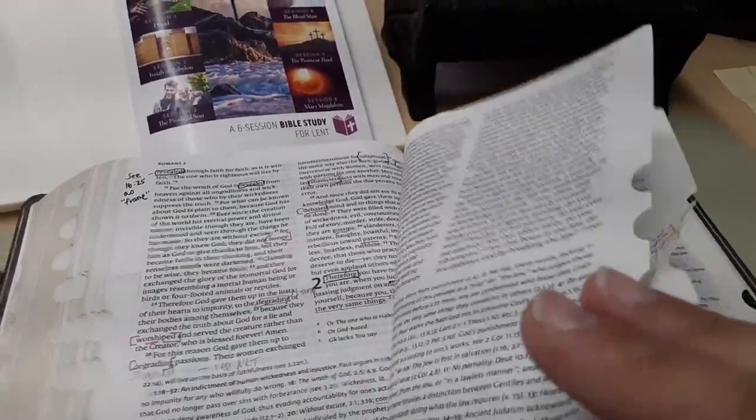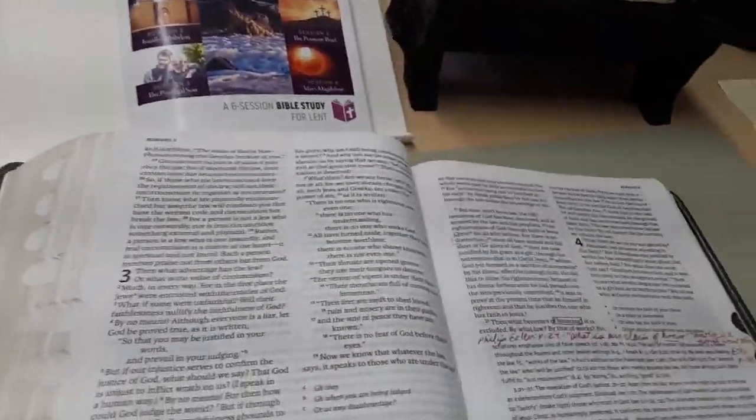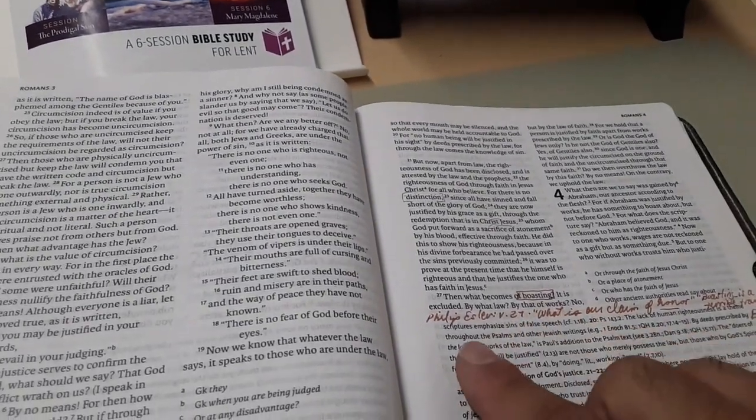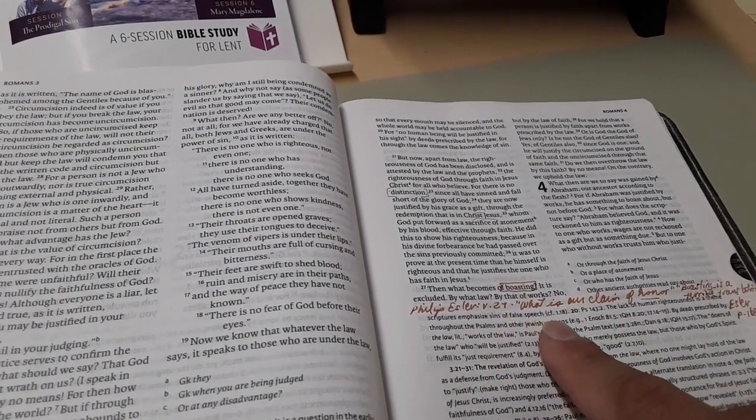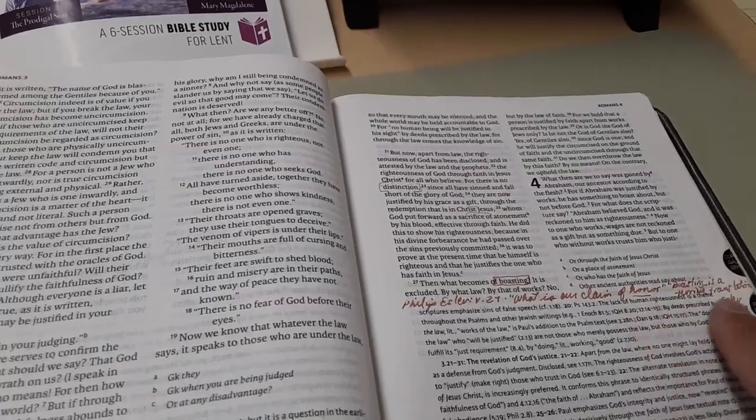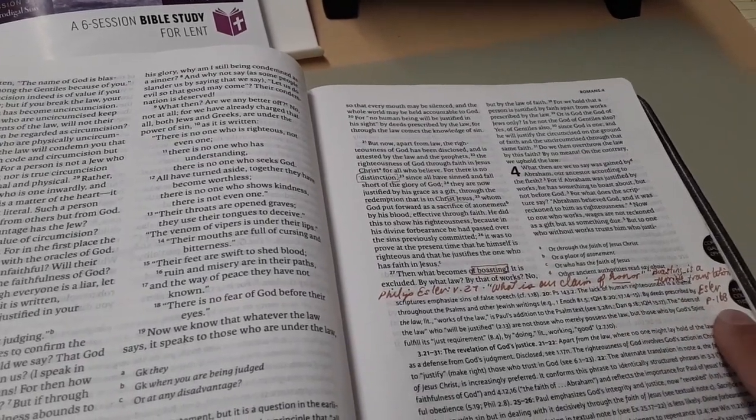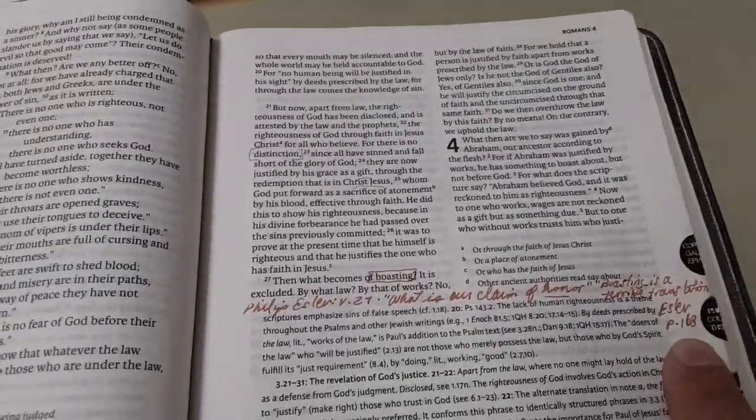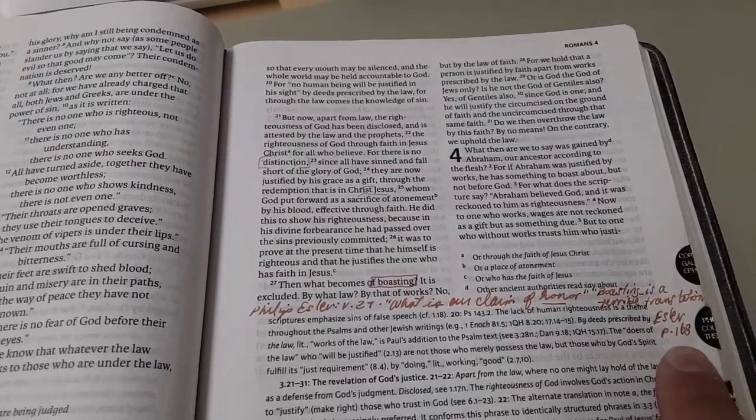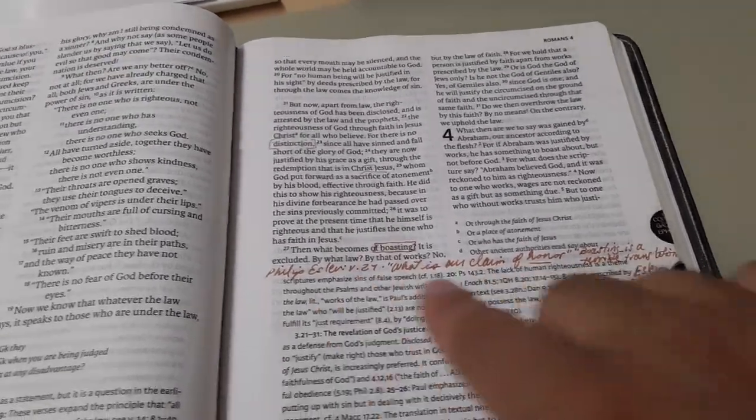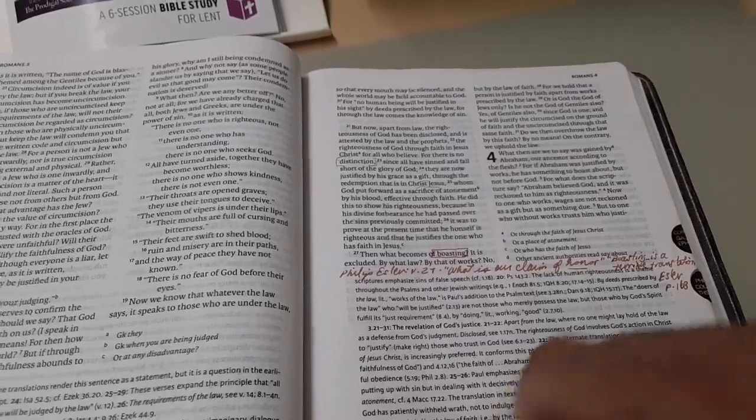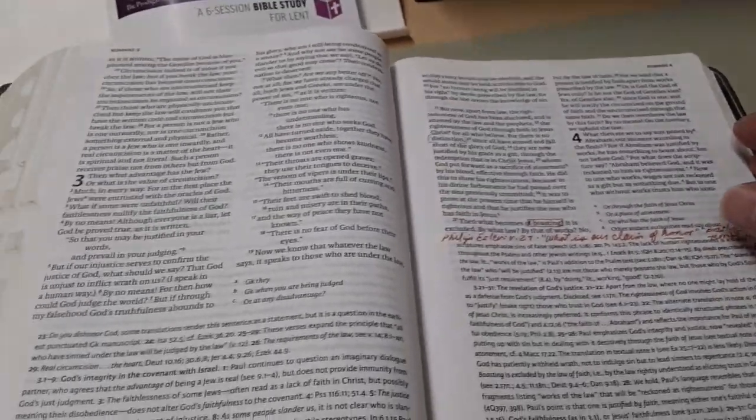And just all kinds of fun stuff. Here's more Brown. Let's see what research inside I do. What then becomes a boasting? Philip Esler, verse 27. What is our claim of honor? Boasting is a terrible translation. Esler, page 168. So Philip Esler looks at the honor and shame of Rome. And so I have that in Brown. It's a point of research from a book or article. So there you go.